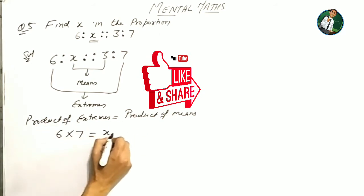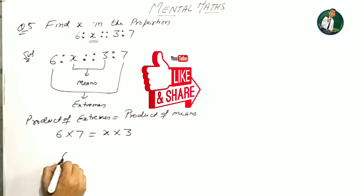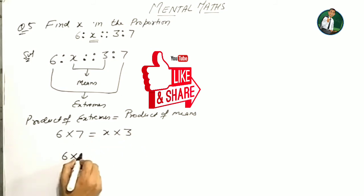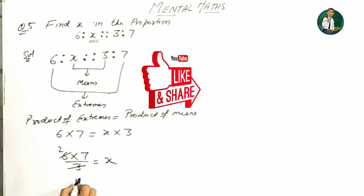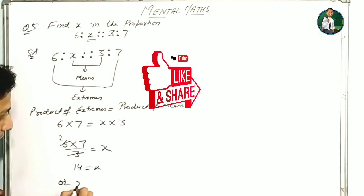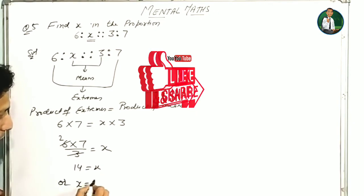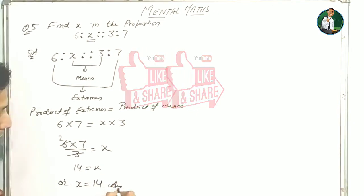You know that the product of extremes is equal to the product of means. So 6 into 7 is equal to x into 3. Transposing, x is equal to 6 into 7 upon 3. That gives 42 upon 3, which equals 14. So x is equal to 14.